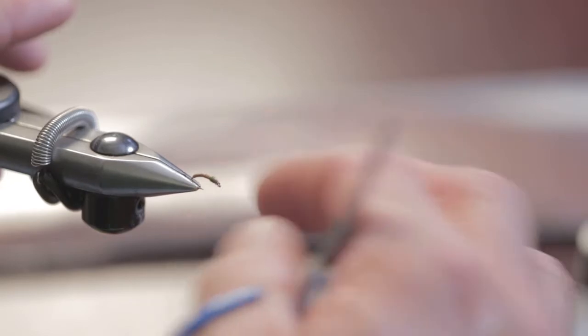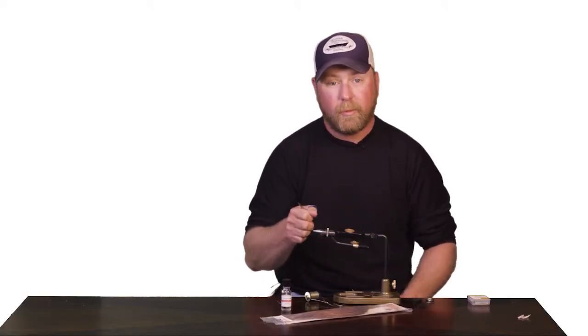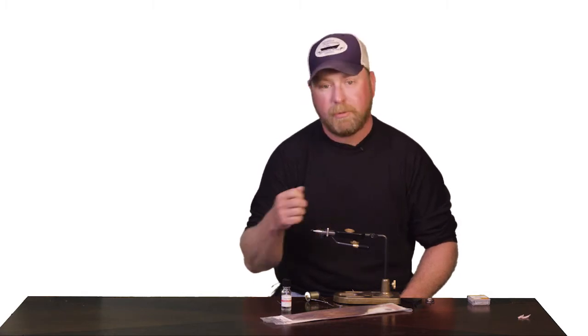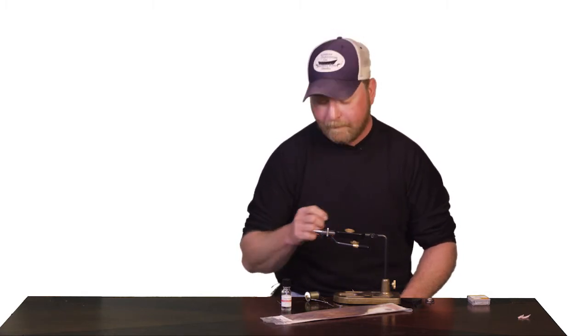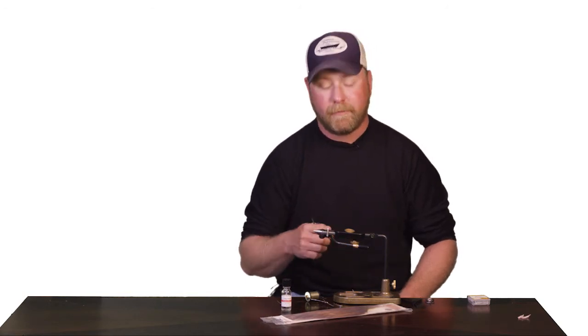When you do go to take the fly out of a fish's mouth, you don't want to grab the quill with your hemostats. What it'll do is end up splitting the quill and you'll end up throwing the fly out. So you want to try and grab the hook itself when you're removing it from the fish's mouth.